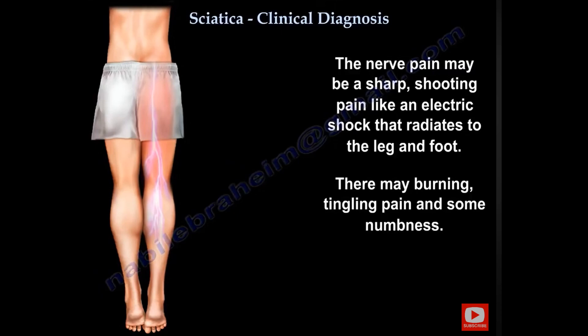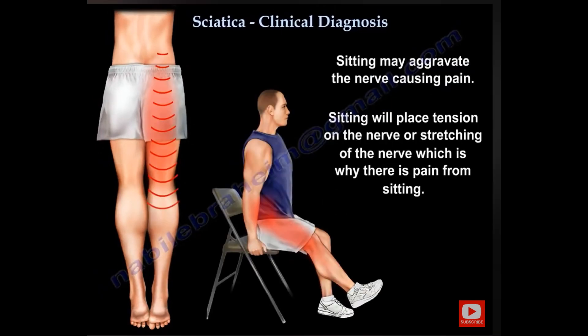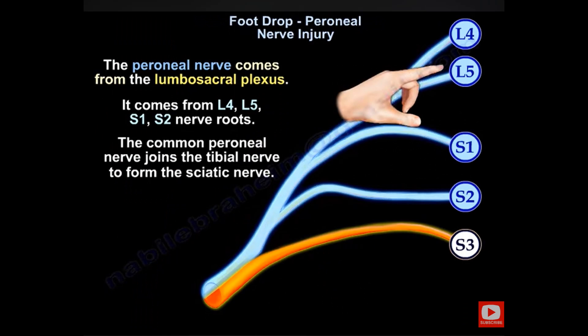Piriformis syndrome is a clinical diagnosis. The patient will complain of sharp, shooting pain like an electric shock that radiates to the leg and the foot. There may be tingling and numbness. Sitting aggravates the condition because it stretches the nerve. The sciatic nerve has two parts: the common peroneal nerve and the tibial nerve.